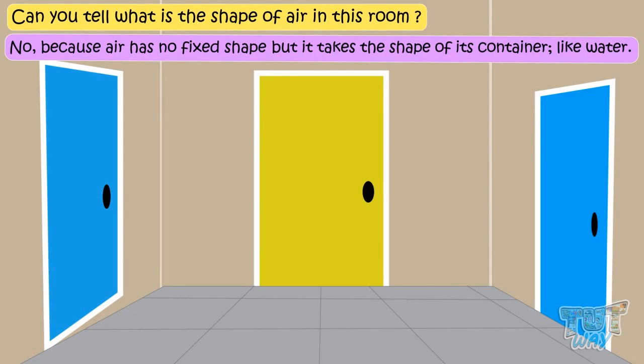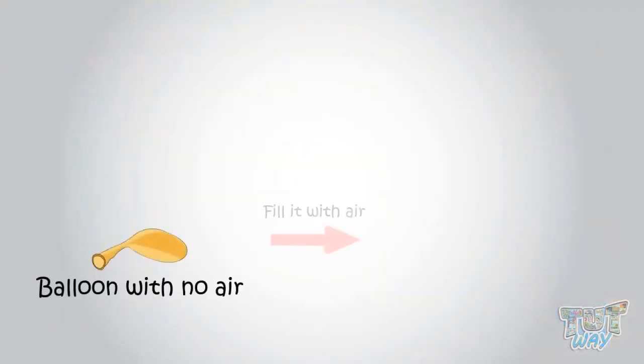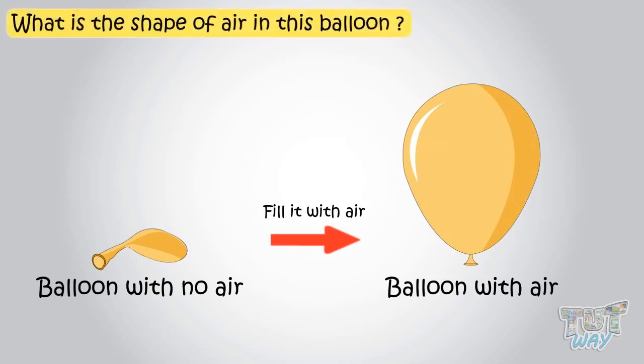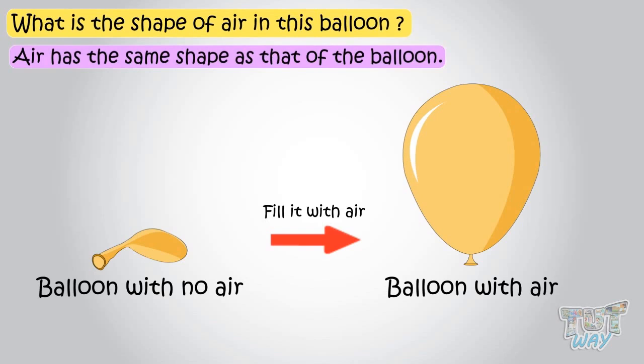Let's see an example. Here is a balloon. Now let's fill it with air. Now this balloon has air. What is the shape of the air in the balloon? Air has the same shape as that of the balloon.